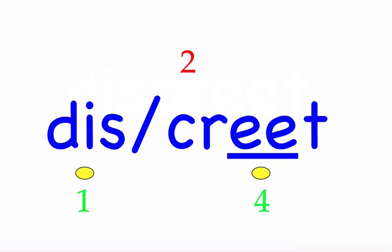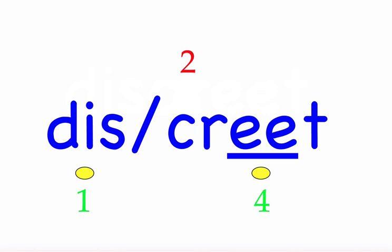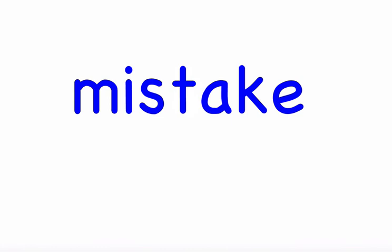The next word is 'mistake.' I made three mistakes on my math test. First syllable 'mis' — three sounds, M-I-S. Second syllable 'take' — three sounds, T-A-K-E. Mark the word. Mistake.